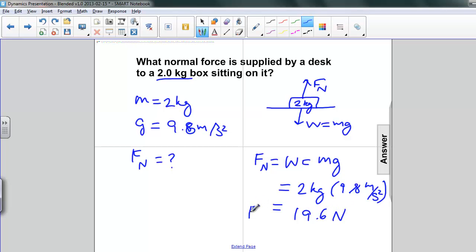So the normal force of the table on that box is 19.6 newtons, and it's pointing upwards.